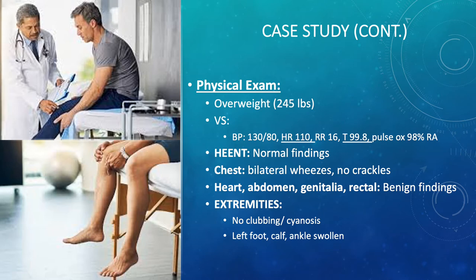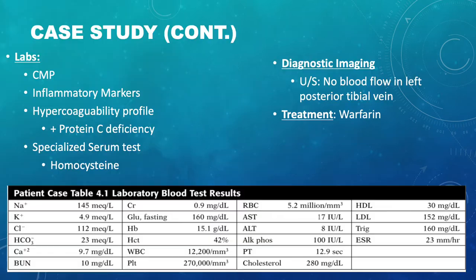As for the extremities, he had no clubbing or cyanosis, but he did have left foot, calf, and ankle that were swollen. For labs, JB had a CMP, inflammatory markers, hypercoagulability profile, and a specialized serum test.